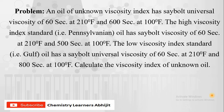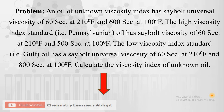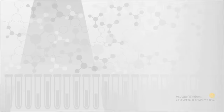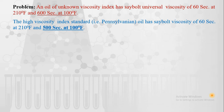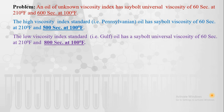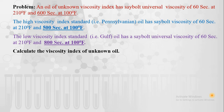So this is the problem. Although this problem looks very lengthy, there is a simple trick for this also. We have to divide this problem into four different sentences. The first sentence is about an oil of unknown viscosity index having a Saybolt Universal Viscosity of 60 seconds at 210°F and 600 seconds at 100°F. The second sentence is of high viscosity index standard. The third sentence is of low viscosity index standard. And the last one is the calculated viscosity index of the unknown oil.